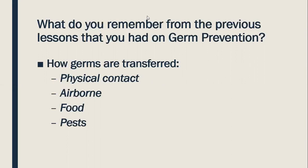Next is airborne transmission — when you sneeze, cough, or spit, germs can be transferred to another person. Next is food: when you have spoiled food or uncovered food, germs can be transferred to other people through that dirty or uncovered food.